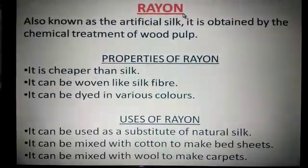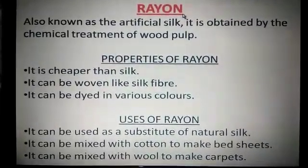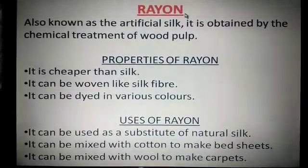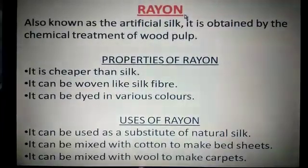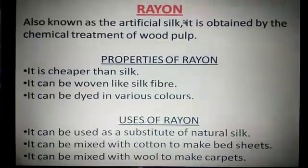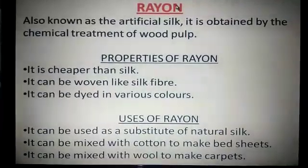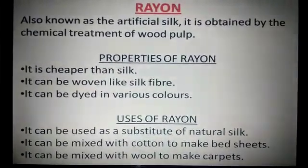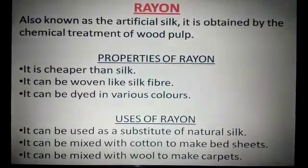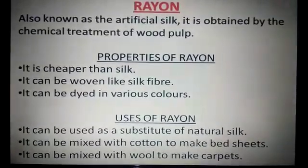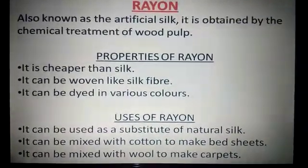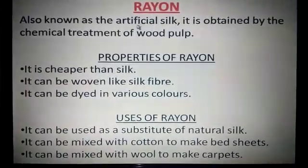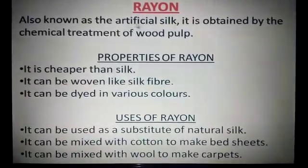If they want to buy silk, it's not in their budget. But they want to use it as a bed sheet or a carpet. They want to purchase silk, but the budget does not support them. So they go with the synthetic fiber, which is rayon. Another name for rayon is artificial silk.